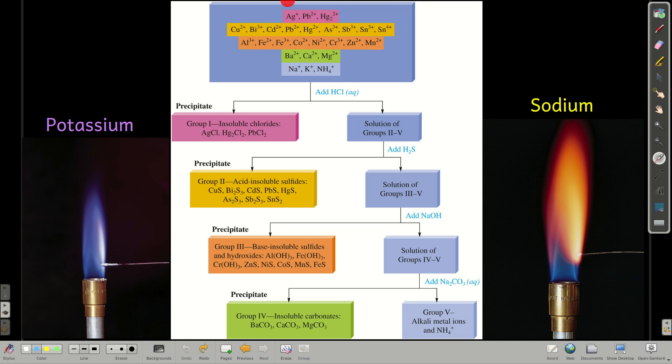So what we do is we have a beaker, let's say, and we have all of these cations in there. First we add some hydrochloric acid. What this does is this causes any of the insoluble chlorides to precipitate out. Remember, most of the chlorides are soluble, but there are some insoluble ones, particularly silver, mercury 1, and lead 2. So you'll get a precipitate, a solid forming in the bottom of your container that has these in it.